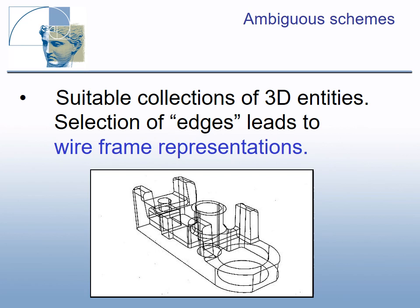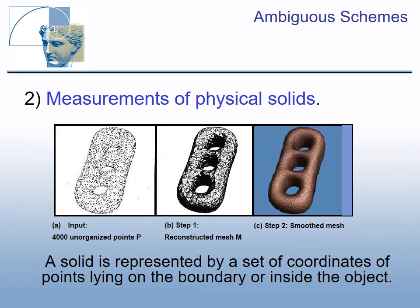Measurements of physical solids can also serve as object models. A solid is represented by a set of coordinates of points lying on the boundary or inside the object — typical data received from 3D scanners. The step of surface reconstruction makes assumptions about the surface, such as degree of polynomial or degree of smoothness, producing different results and making this scheme ambiguous.